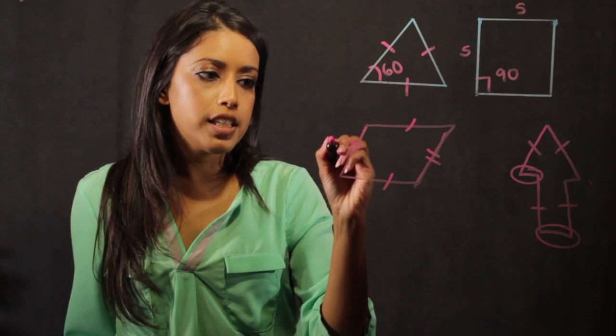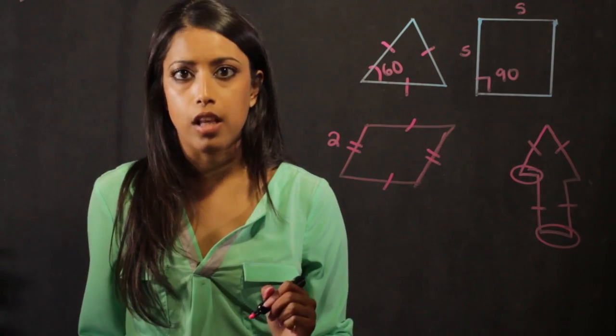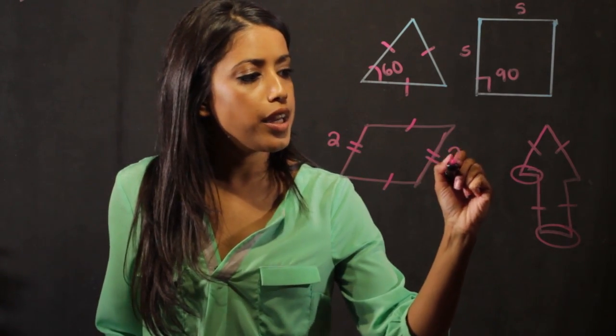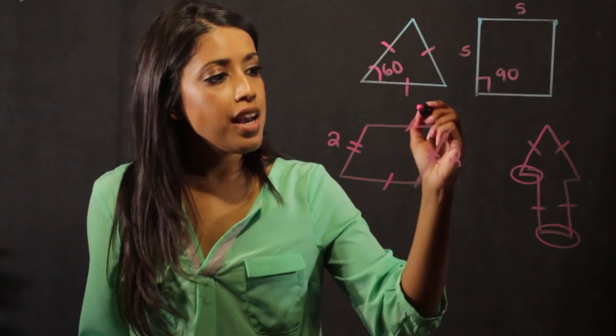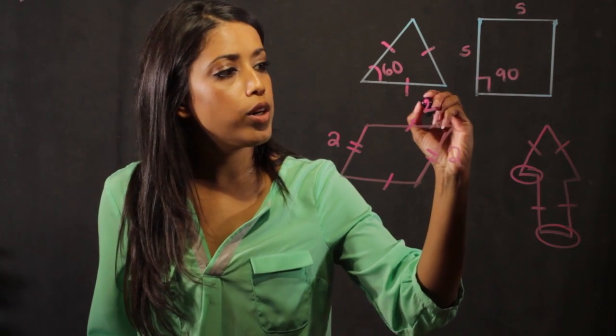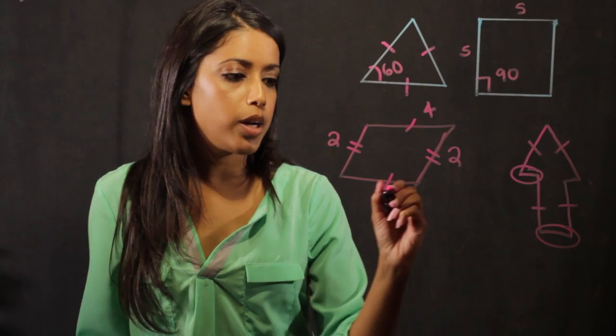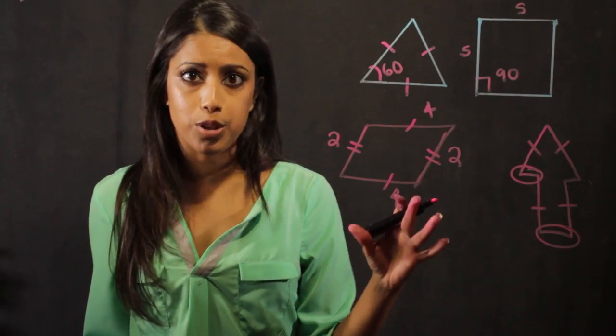So if this side was two inches long, that means that this side over here is also two inches long. The side on top, if it was four, then I know that the side on the bottom is also four because this is a congruent trapezoid.